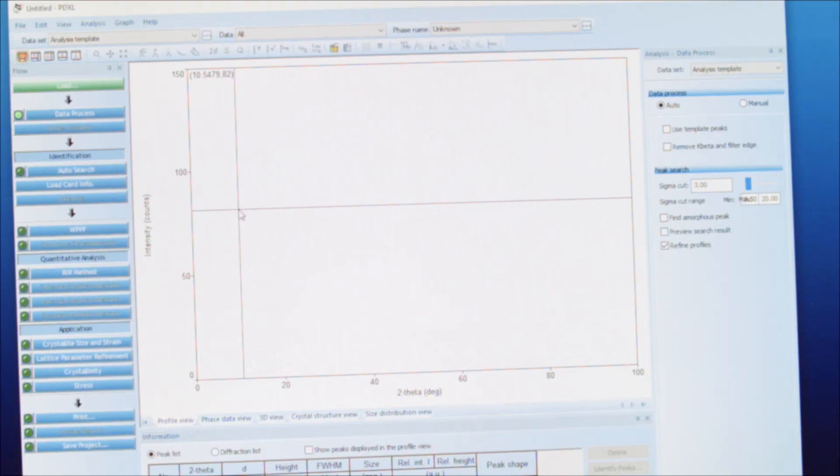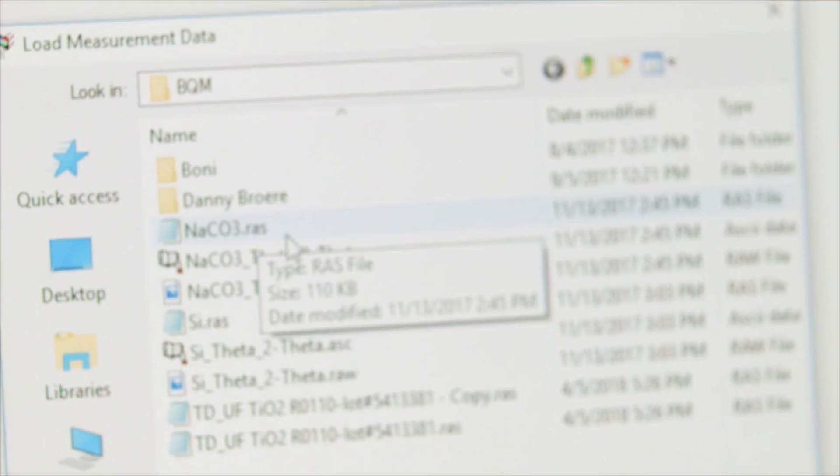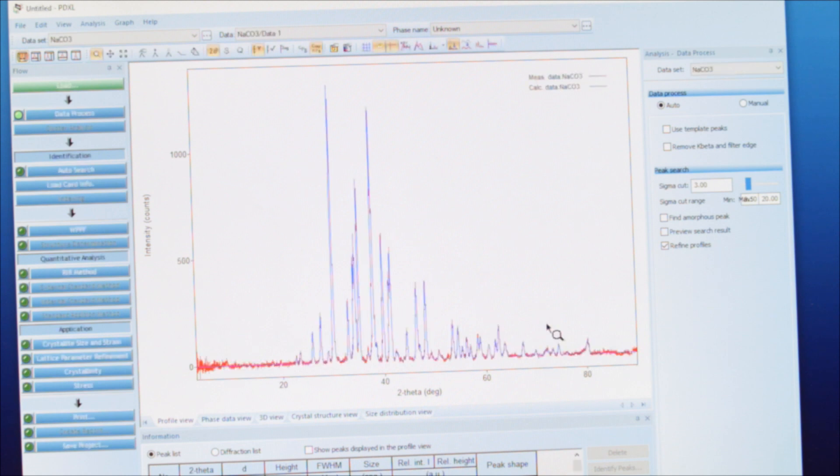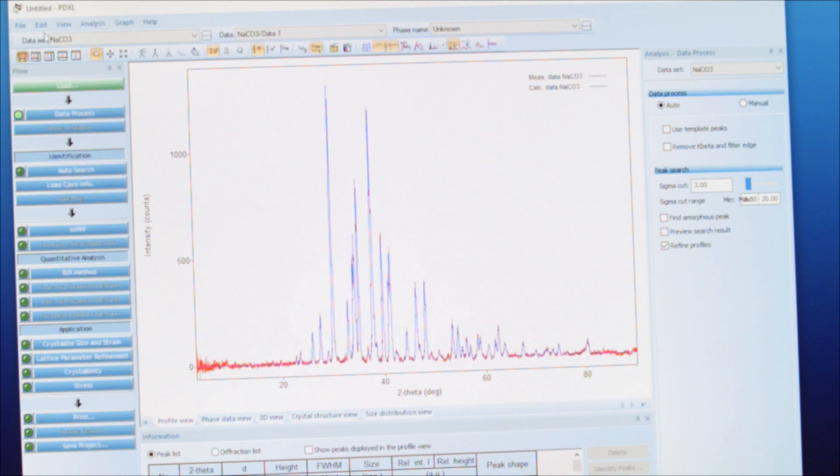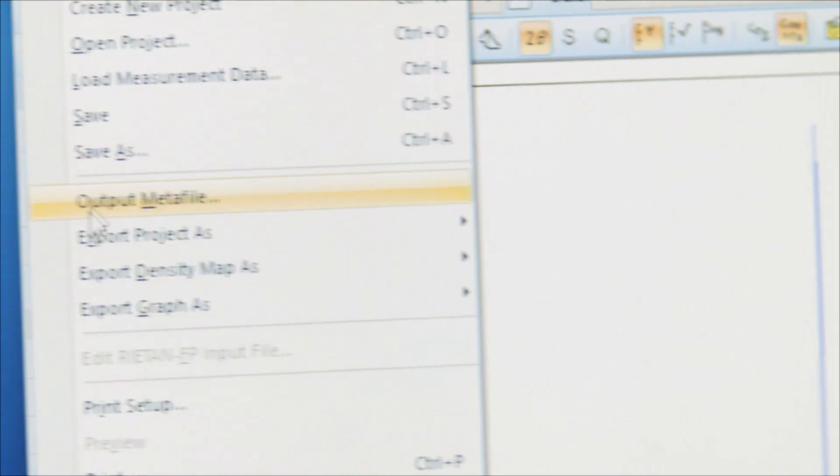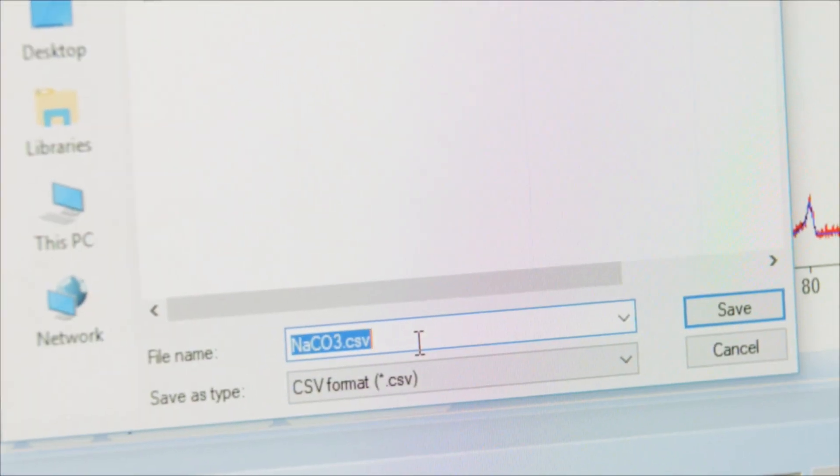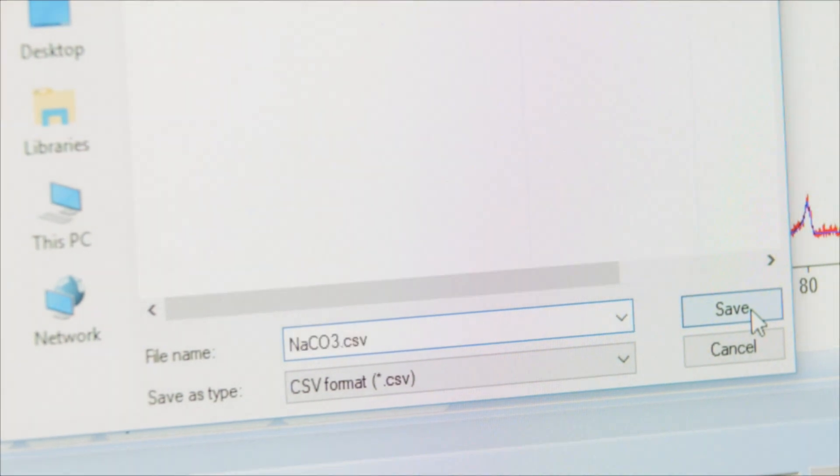Once the window opens, click the load button under the flow window and navigate to where you've saved your data. Double click the RAS file. Once the data appears on the screen, click file export graph as CSV format. The default will open to save in the folder you've already identified. You can use the same name and click save.